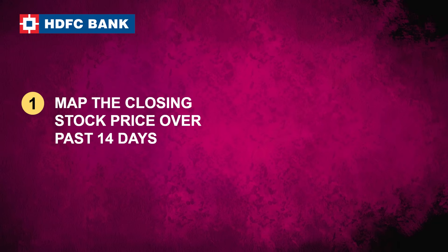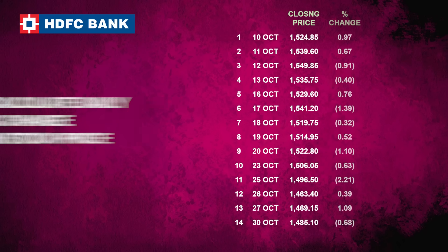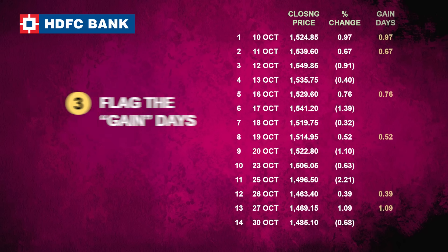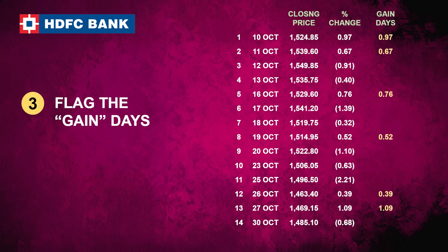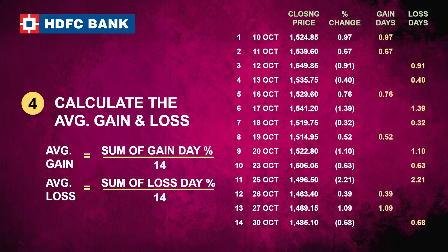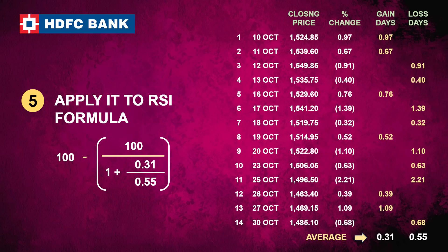Step 2 requires us to calculate the percentage change, which can be in the upward or downward direction. Step 3 is to isolate the occasions on which the stock made a gain and the days on which there was a loss. Step 4 is to sum up the percentage movement across the gain and loss days and divide by 14, which for HDFC Bank comes to a 14-day average gain of 0.31 and a 14-day average loss of 0.55. Step 5 is to apply these two numbers to the RSI formula, giving us a 14-day RSI of 36.5 as of 31st of October.